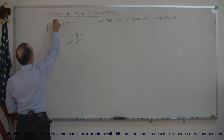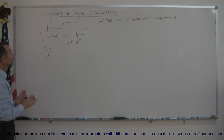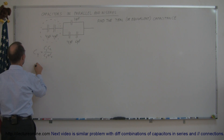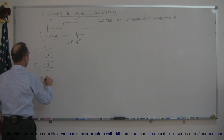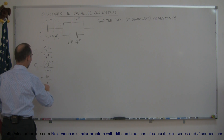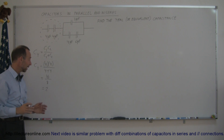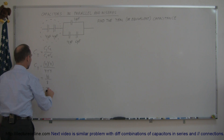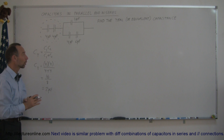Starting with the first pair of capacitors, we apply this equation and replace them with a single capacitor. C total equals the product 4 times 4 divided by the sum 4 plus 4, which is 16 over 8, equal to 2. That means these two capacitors in series can be replaced by a single capacitor of 2 microfarads.